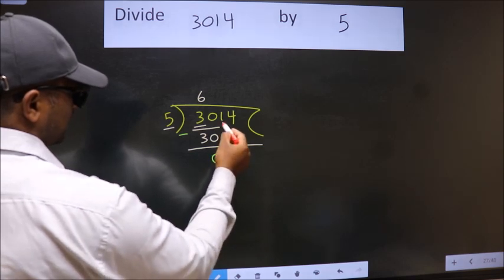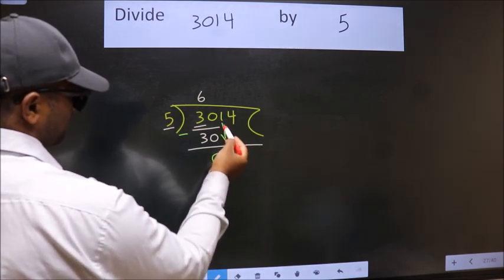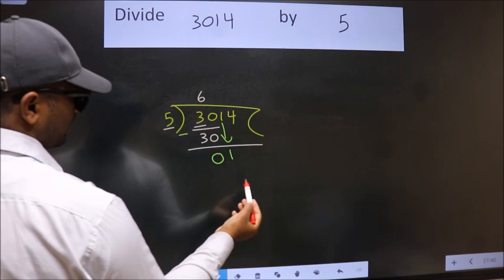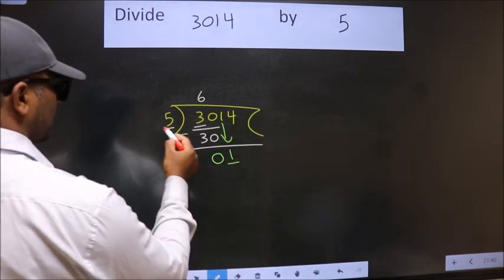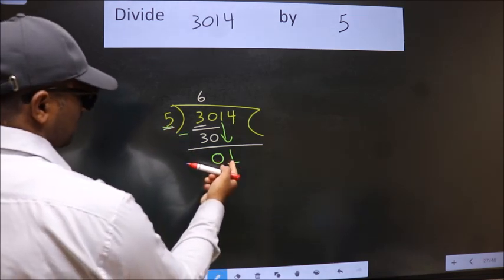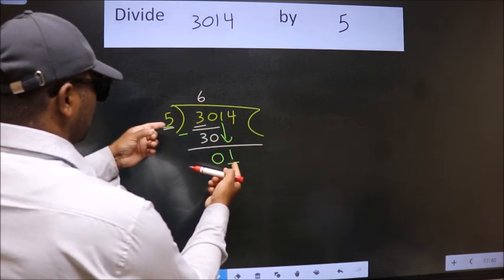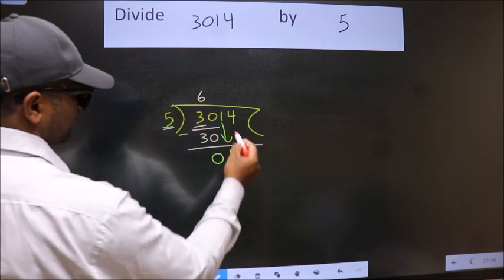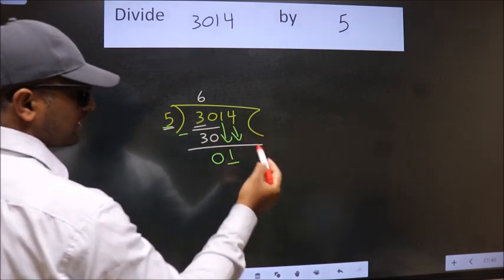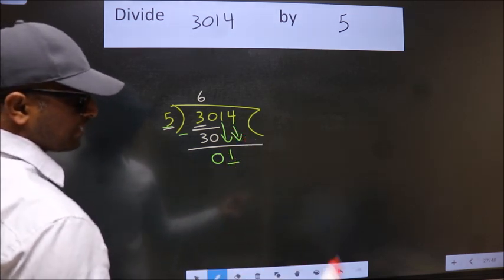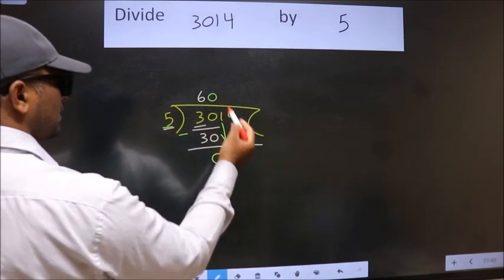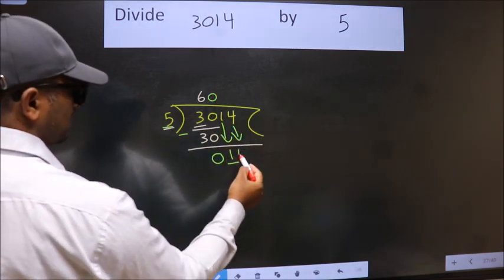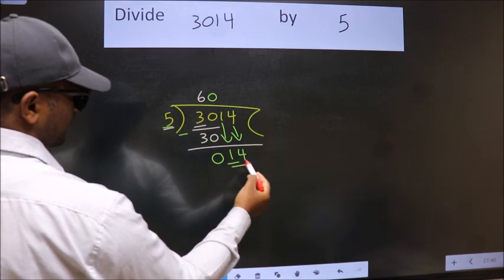After this, bring down the beside number. So, 1 down. Now, here we have 1. Here 5. 1 is smaller than 5. So we should bring down the second number. And the rule to bring down second number is put 0 here. Then only we can bring this number down.